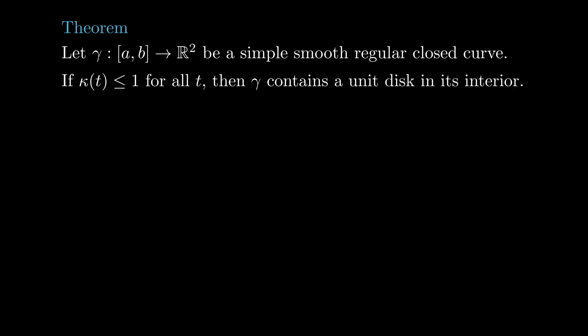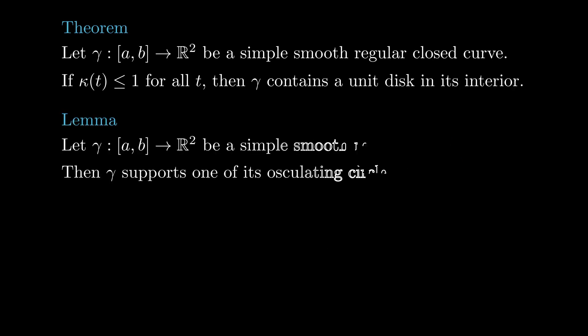The moon in the puddle theorem will follow from the following lemma, which we will prove next. The lemma says that if we have a simple smooth regular loop, that is, a smooth regular curve that starts and ends at the same point but is not necessarily smooth at such point, then the curve supports one of its osculating circles from the outside.